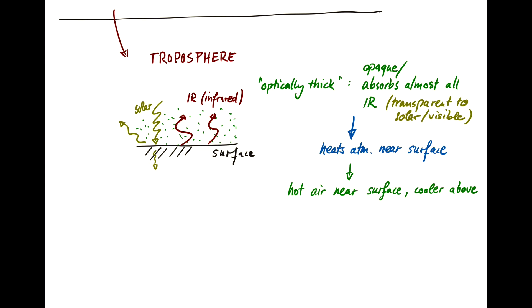So my configuration is not stable and we get convection. That's why it's called the troposphere—because it has vertical convection, it turns over.